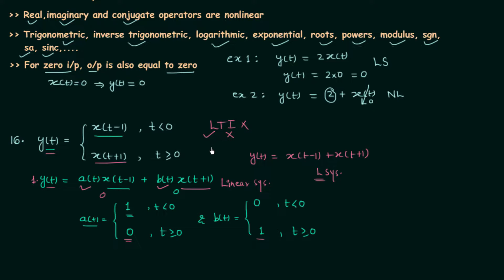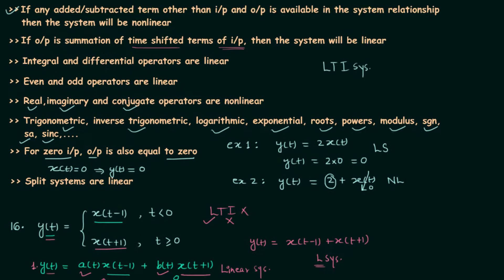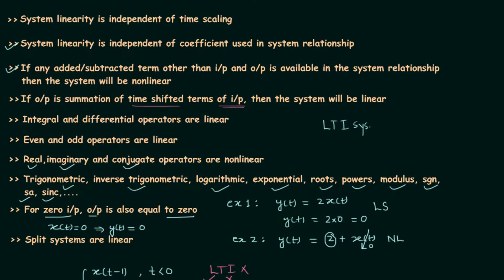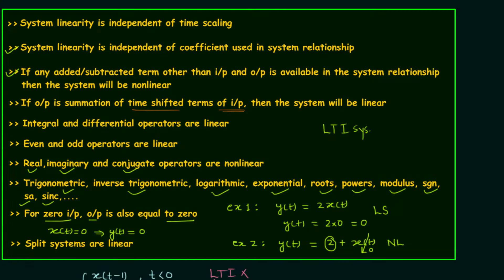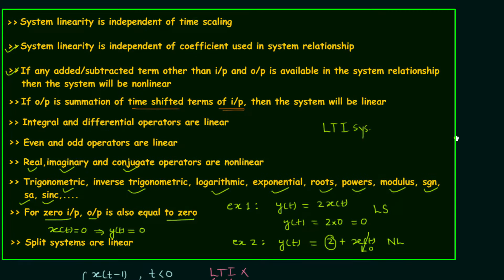For an LTI system, the system must be both linear and time invariant. So this is our tenth property: split systems are linear systems. Note down all ten properties visible on the screen — we will use them in the coming chapters. If you have any doubts, you may ask in the comment section. Thank you.